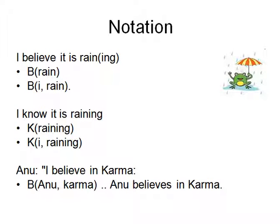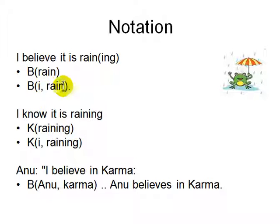So we will first use some notation. First we will talk about belief. Belief involves the agent — the person whose belief it is. So if you say 'I believe it is raining', you write B for belief and rain, meaning you believe in rain. And you need to add the person — which agent is believing that — and rain, plus other qualifications like time and location: where it is raining and what time it is raining.